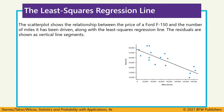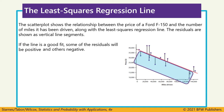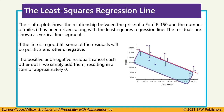Here we have a scatter plot of miles driven versus price for Ford F-150s. The residuals are the vertical distances from each actual point to the point predicted by the line of best fit — just the vertical distance from the point to that line. Some residuals are positive, for points above the line of best fit, and others are negative, for points below it. If we just add these together, they largely cancel each other out, giving a sum right around zero.